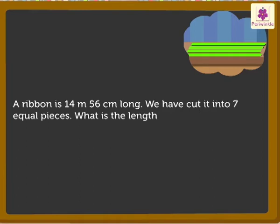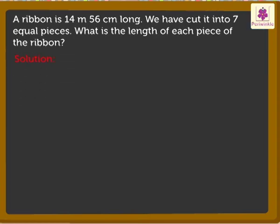First, we read this story. What information does it give? A ribbon is 14 meters 56 centimeters long. We have cut it into 7 equal pieces. Now, let us see what we have to find out. What is the length of each piece of ribbon?